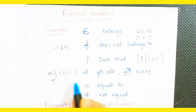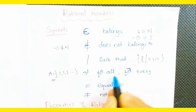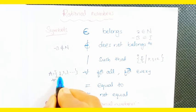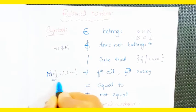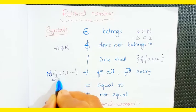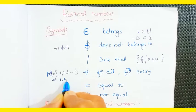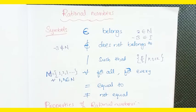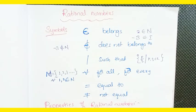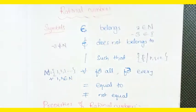The symbolic notation 'for all': for example, 1, 2 belongs to natural numbers. You also know the 'equal to' and 'not equal to' symbols.